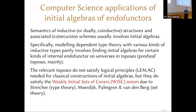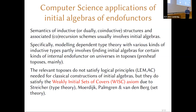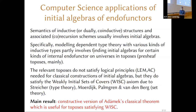There's a weak form of choice called WISC — Weakly Initial Set of Covers — originally suggested in the context of type theory by Thomas Streicher and in constructive set theory by Aczel, Moerdijk, and the late Erik Palmgren and Benno van den Berg. This choice principle is fortunately satisfied by the kinds of toposes used in constructing models of type theory: various realizability toposes, and sheaf and presheaf toposes based over classical sets all satisfy WISC.